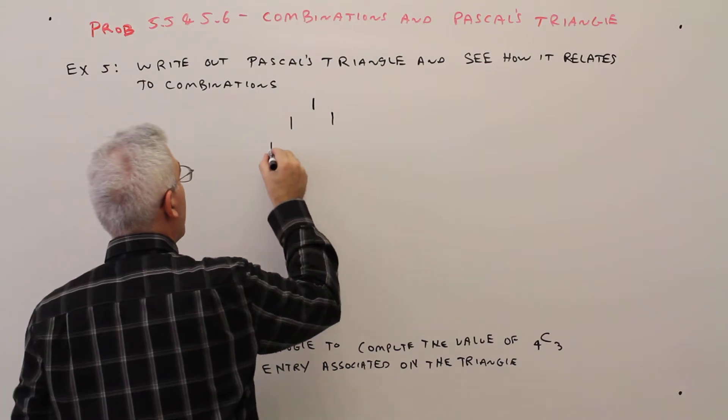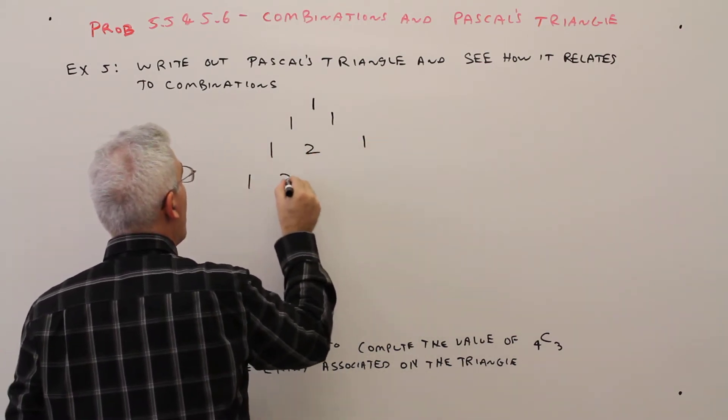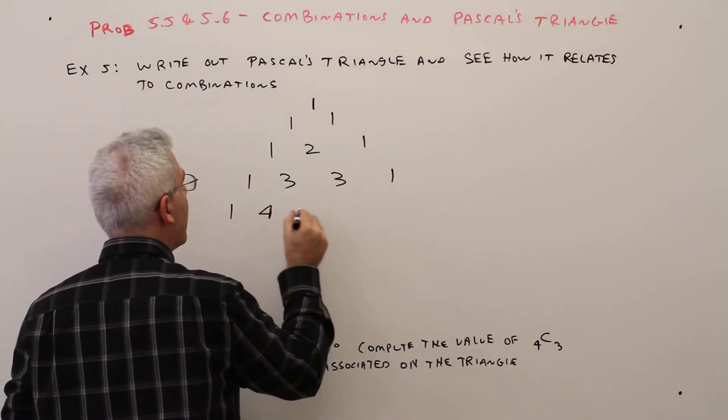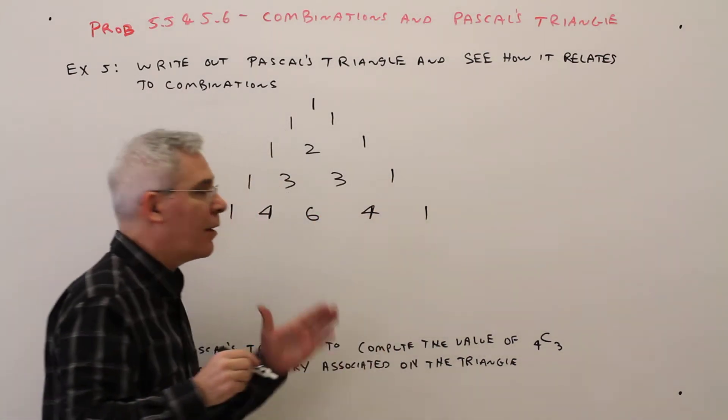And then we're going to get a 1, a 2 and a 1, a 1, a 3, a 3 and a 1, a 1, a 4, a 6, a 4 and a 1, etc.